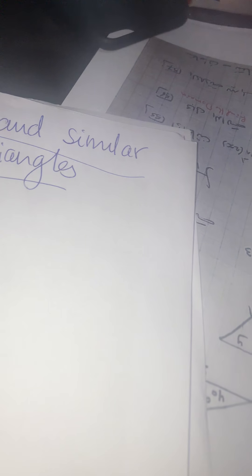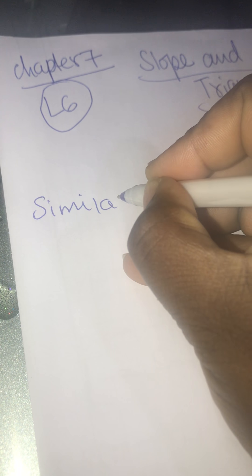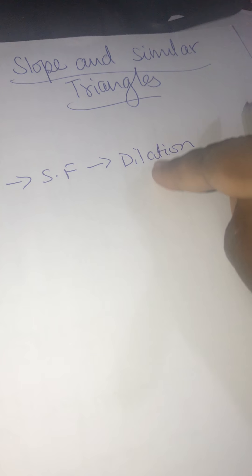Let's remind ourselves. When I see 'similar,' I need to think about scale factor and dilation. So that means I'll have two triangles — one big, one small — and my triangles will be right triangles.